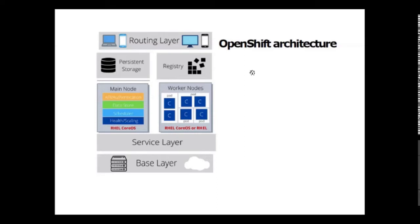Pods go down and come back up with different IP addresses. To avoid that conflict, we abstract all IP addresses and hostnames onto the service layer. The service layer provides a permanent IP address and hostname to pods, connects applications together, and provides simple internal load balancing and distribution of tasks across application components.